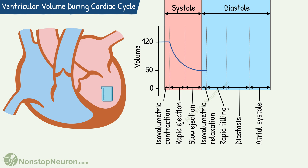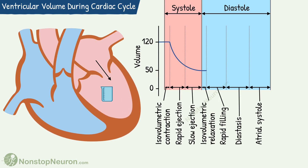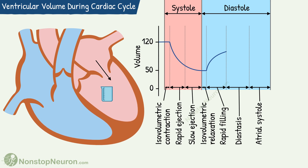Now the atrioventricular valves open and the filling of ventricles starts. Initially there is a rapid rush of blood from atria to ventricles, so the volume shows a rapid increase. Then during diastasis, the filling gets slow, so volume increase also becomes slow. Then the atria contract, and this pumping increases the ventricular volume. This marks the end of the diastole, and one cycle is completed.